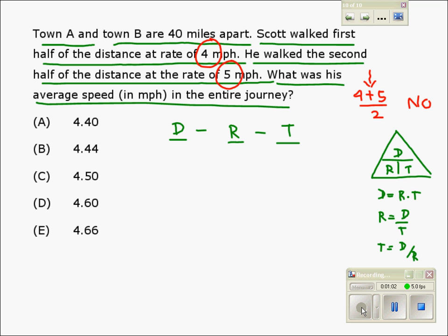This journey is made up of two parts. In Part 1, the distance is 20 miles, half of the total 40 miles, and the rate is 4 miles per hour. In the second part, the distance is again 20 miles, and this time the rate is 5 miles per hour.